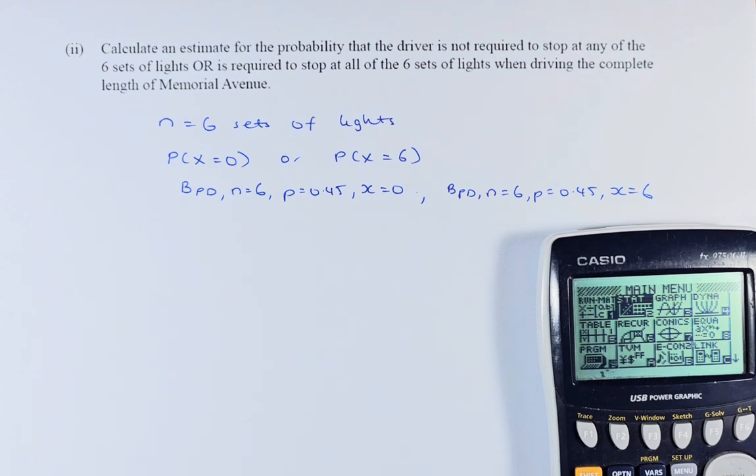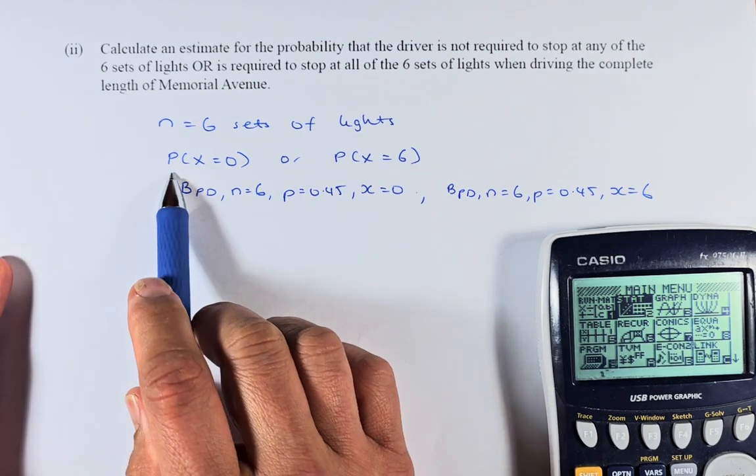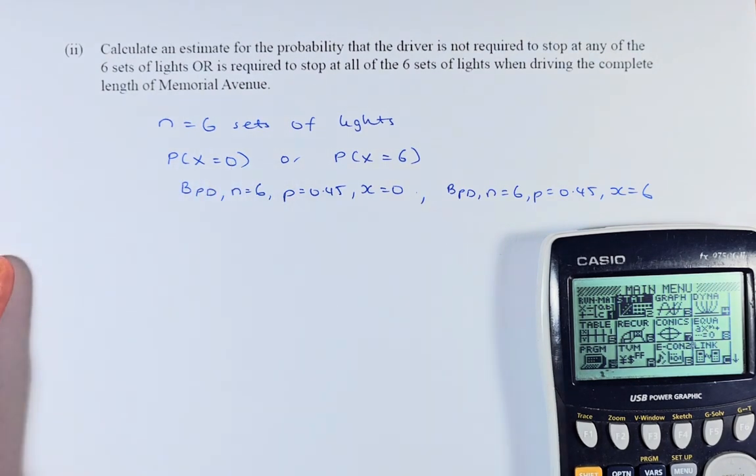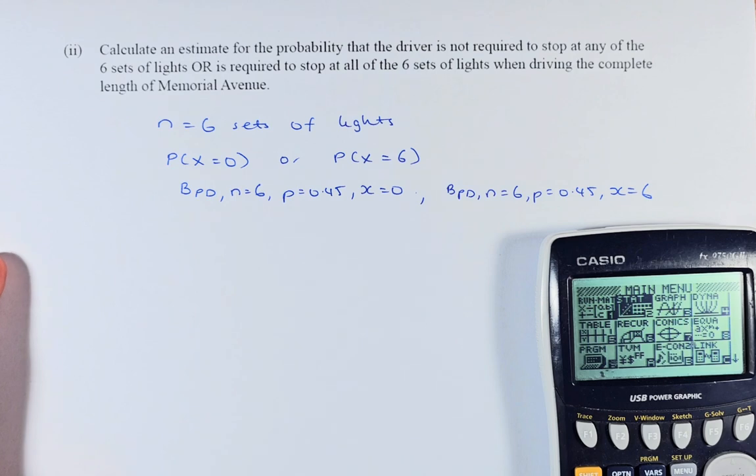And we are going to add them up because the word is OR. In statistics, OR means you add. So now, we need to calculate probability of x equal to 0. And then we are going to change it to part when x equal to 6. So what we are going to do is very straightforward.